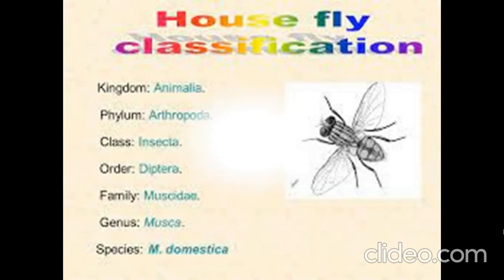Next example: kingdom Animalia, phylum Arthropoda, class Insecta, order Diptera, family Muscidae, genus Musca, species Musca domestica — the common housefly.